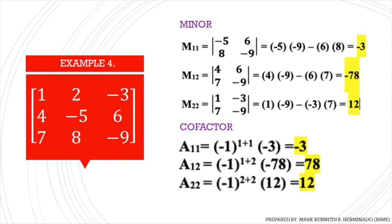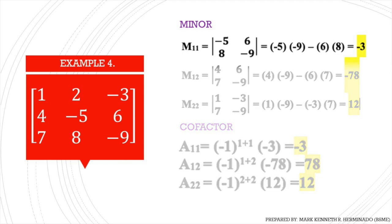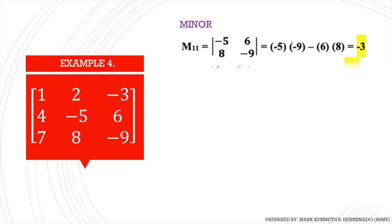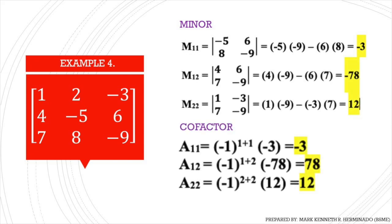So for the last example, we are given here a 3x3 matrix. We are asked to get the minor and cofactor of a11, a21, and a22. To obtain the minor of a11, we have to delete the entire row and column of it. So yung natitirang elements ay negative 5, 6, 8, at negative 9. By basket method, we can obtain the minor of a11, which is negative 3. To obtain the minor of a12 and a22, same process — we have to delete the entire row and column, and the remaining elements become the minor. Then by basket method, we can obtain the answer.